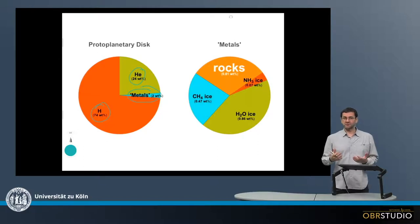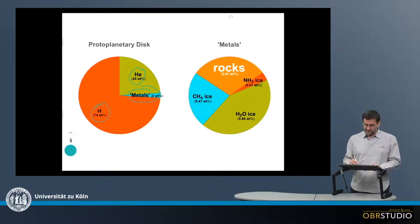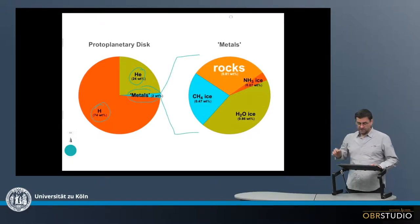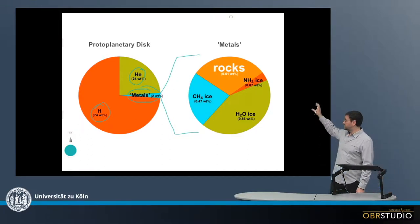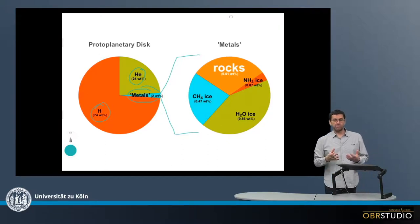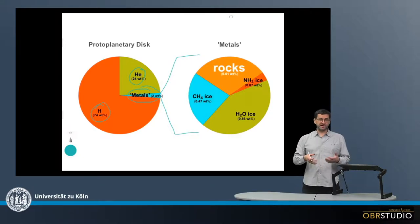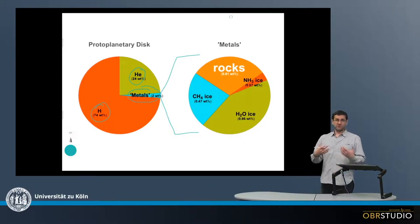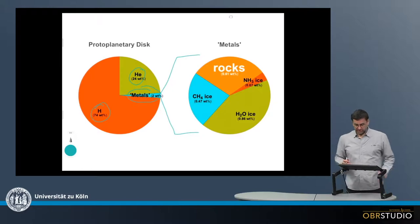The metals category is what is important for us in cosmochemistry, and this is what is shown here to the right. Within the metals we have this large section which is rocks. Rocks are what is important to cosmochemistry because this is basically terrestrial planets, asteroids, moons, and all other planetary bodies.